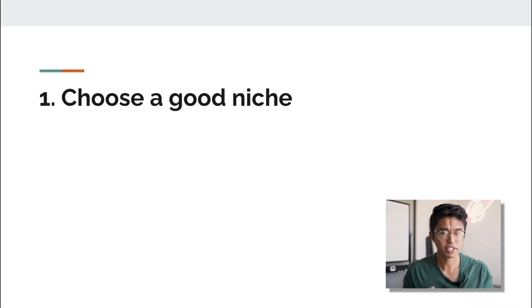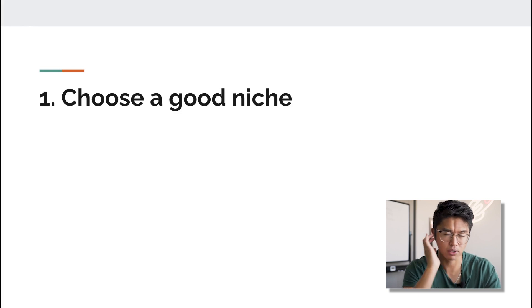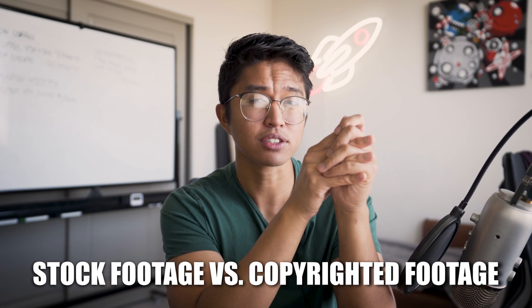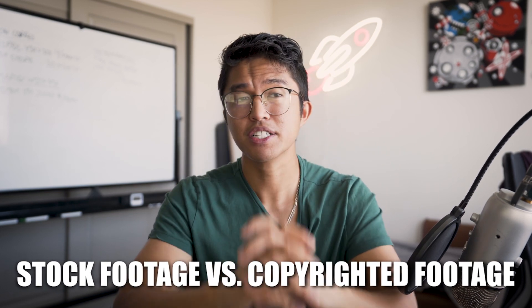The first thing I want to go over is choosing a good niche. It's a common question I always get asked, and I can't tell you how many people are going into niches which I really don't think is going to work for them. When it comes to niche selection, there are two types of niches for YouTube automation, and it mainly comes from the visual aspect of it. One type uses stock footage and the other type uses copyrighted footage.